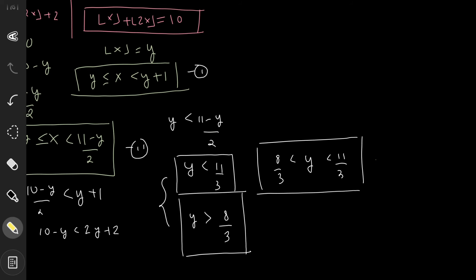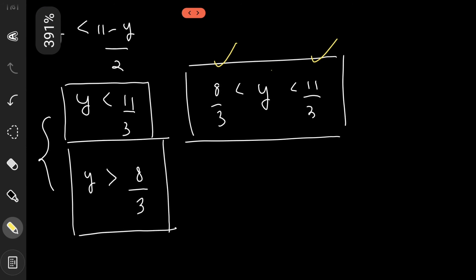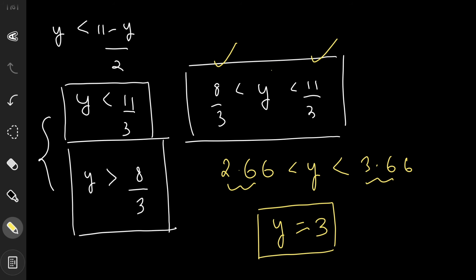Combining both results: 8/3 < y < 11/3. Since floor(x) always outputs an integer, y must be an integer. Now 8/3 ≈ 2.66 and 11/3 ≈ 3.66, and the only integer between these two values is 3. Therefore y = 3.